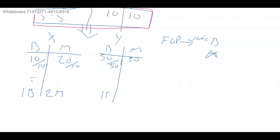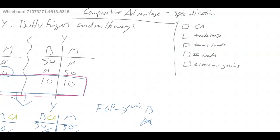For country Y, I divide by 50: 50 divided by 50 is 1, and 50 divided by 50 is 1. So the opportunity cost for country Y to produce one Butterfinger is one Milky Way, while country X gives up two. Because two is greater than one, country Y has the lower opportunity cost for Butterfingers — so Y has the comparative advantage in Butterfingers. Mathematically, it's impossible to have a comparative advantage in both, so by default X has the comparative advantage in Milky Ways.